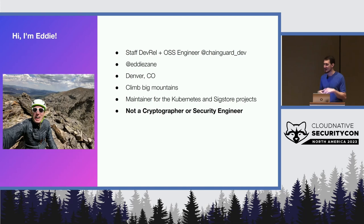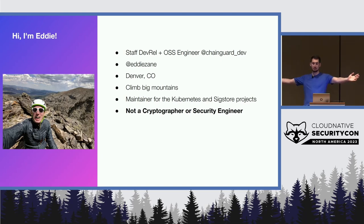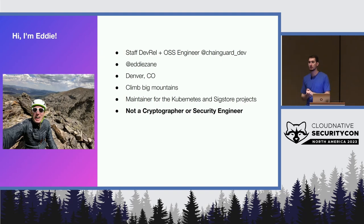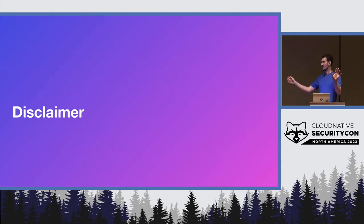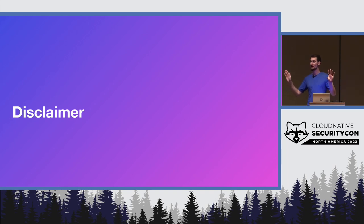A quick bit about me: I'm a software engineer at ChainGuard. You can find me on the internet at Eddie Zane. I live in Denver, Colorado and I like to climb big mountains. I'm a maintainer for the Kubernetes and Sigstore projects, so I work on kubectl and all things CLI. In Sigstore I work on a tool called GitSign, which we'll take a look at in a bit. I am not a cryptographer or a security engineer — so take all advice as it will. I know nothing about this except that it's fun and cool, and I've spent a lot of time playing with it, but don't take advice from me in a production world.